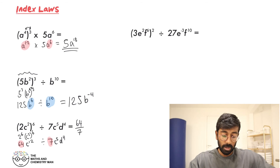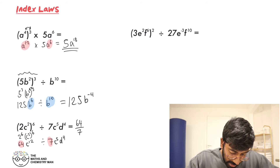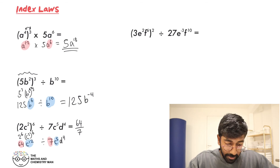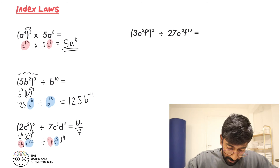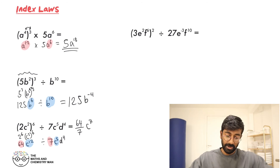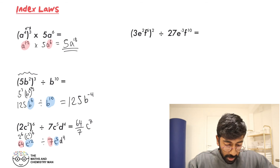Next, get the C's sorted: C to the 12 divided by C to the 5 — take away the powers — that's C to the power of 7, because 12 take away 5 is 7.